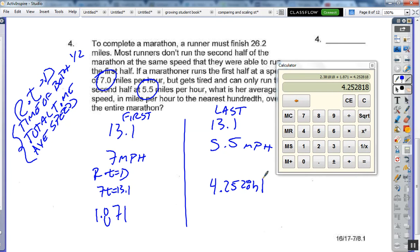And so we know that that times the rate equals distance. Well, the distance is 26.2, so now we need to divide 26.2 divided by my 4.2528. And I get 6.16 miles per hour.